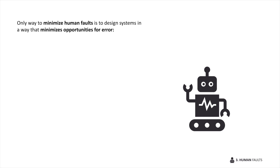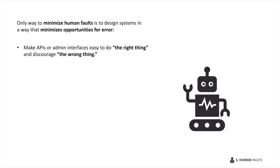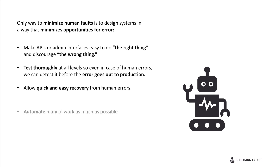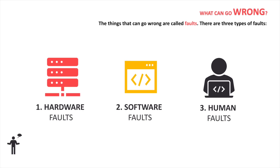So how do we cope with human faults? The only way to minimize them is to design systems that minimize opportunities for errors. For example: make APIs or admin interfaces easy to use correctly and discourage the wrong thing, test thoroughly at all levels so human errors can be detected before they reach production, allow quick and easy recovery from human errors, and automate manual work as much as possible.